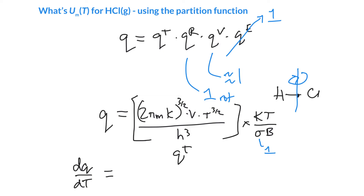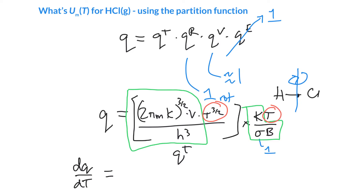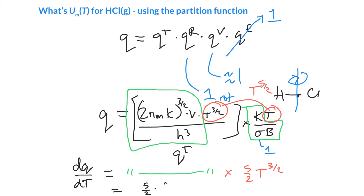We take the derivative of the full partition function. Everything inside the green terms is held constant — only the temperature-dependent terms matter. I have T^(3/2) from translation and T^1 from rotation, giving T^(5/2). Differentiating T^(5/2) gives 5/2 × T^(3/2). Just like before, expressing this in terms of the partition function, dQ/dT equals 5/2 times the original partition function divided by the temperature. This allows cancellation of the partition functions without having to evaluate all those complicated terms.